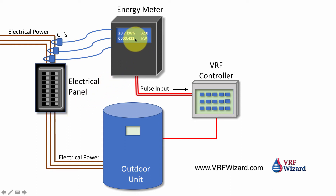That meter collects the data and sends pulse inputs to your VRF controller — in this case a Daikin VRV controller with their PPD software. The PPD software does a calculation for each indoor unit based on its electronic valve position, return air temperature, and factory settings. It determines how much of the energy used at the outdoor unit should be charged to each tenant.